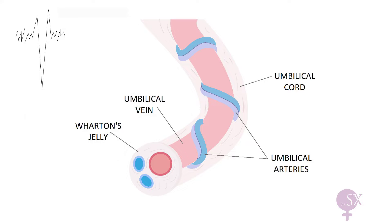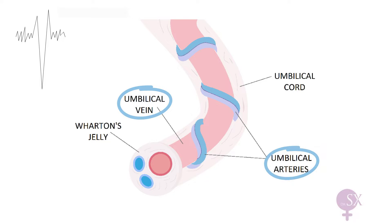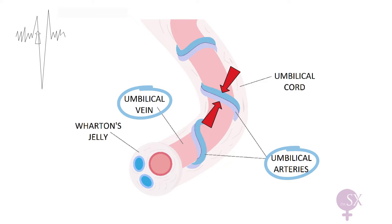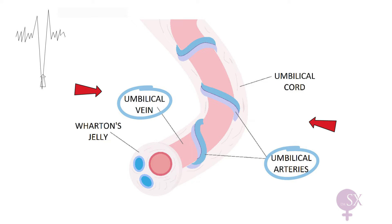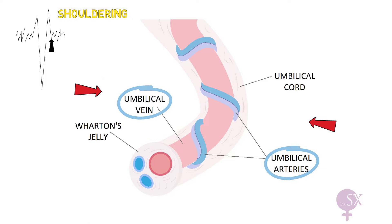The umbilical cord is composed of an umbilical vein and two umbilical arteries. When pressure is applied on the umbilical cord, the umbilical vein is occluded first, as it is a low-pressure vessel. This causes an acceleration of the fetal heart in response. Next, the umbilical artery is occluded, causing a deceleration on the CTG. When pressure on the cord is then released, another acceleration occurs and the fetal heart returns to baseline. These accelerations before and after the variable deceleration are referred to as shouldering, and they indicate that the fetus is not yet hypoxic and is compensating well.